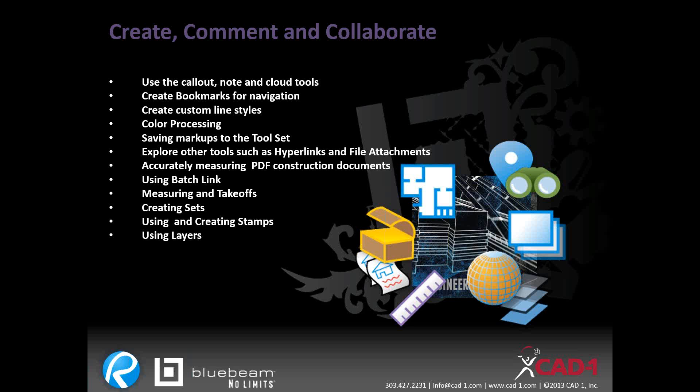I'll also cover color processing — a way of filtering out materials — and batch linking, which is a new feature in Review 12. Batch linking lets you create hyperlinks within drawings, so all those detail references become clickable. You can create links to a website, a cut page, or somewhere in the specs. We'll also look at measuring and takeoff tools — you can do quantity takeoffs right from a PDF for cost estimating — plus layers.